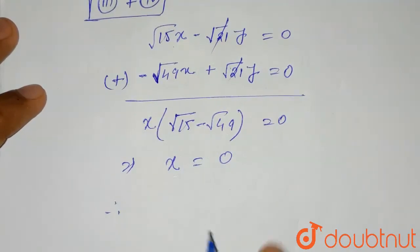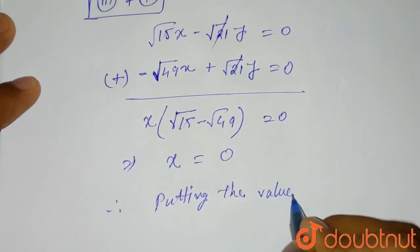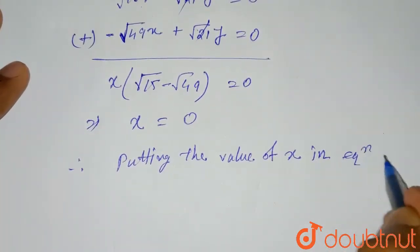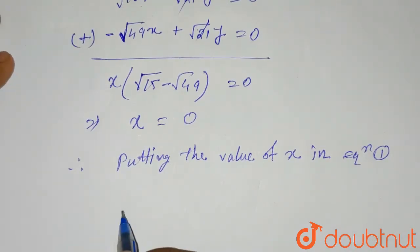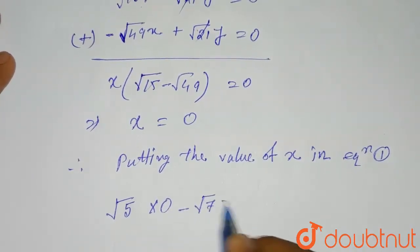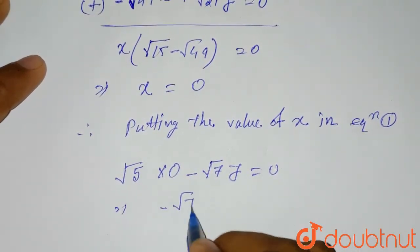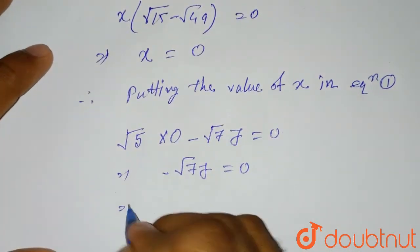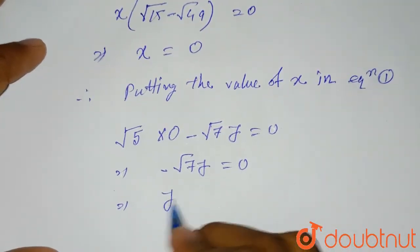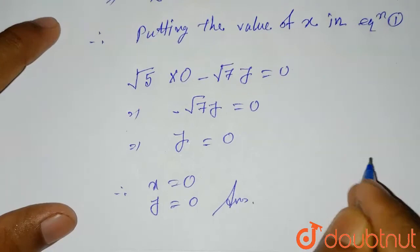Similarly, putting the value of X in equation 1: root 5 into 0, minus root 7 Y equals 0. This gives minus root 7 Y equals 0. Dividing by minus root 7, Y is also equal to 0. Therefore, X equals 0 and Y equals 0. So this is the required solution of this question. Thank you.